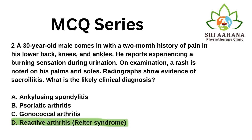The correct answer is D, Reactive arthritis. The symptoms of pain in the low back, knees, and ankles, along with the burning sensation during urination, rashes on the palms and soles, and the radiographic evidence of sacroiliitis all align with reactive arthritis.